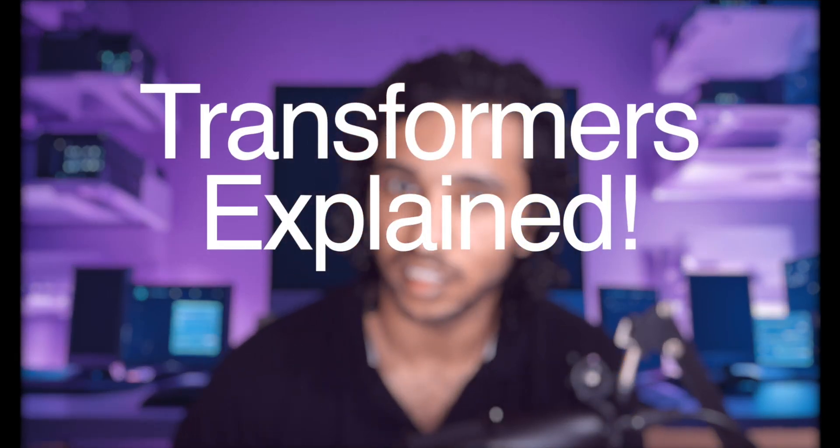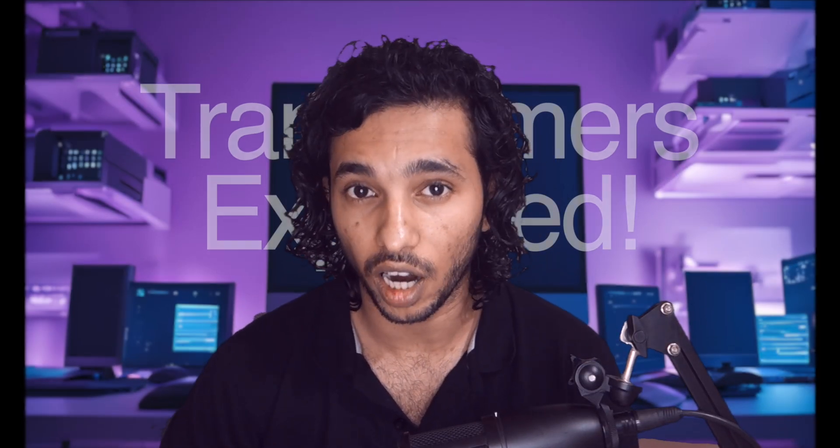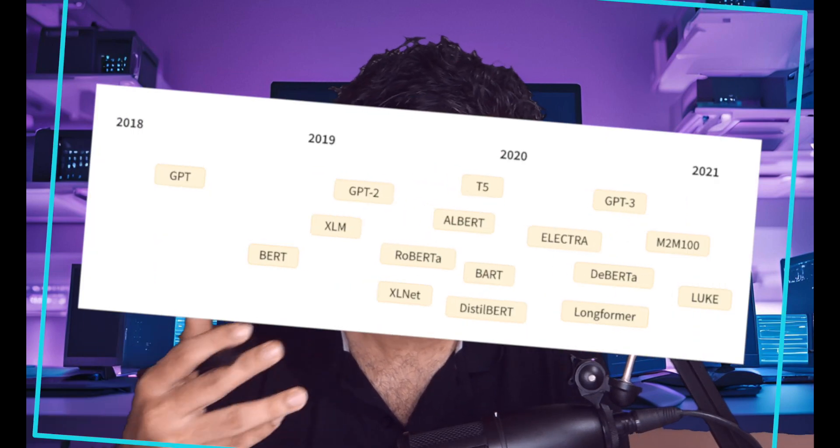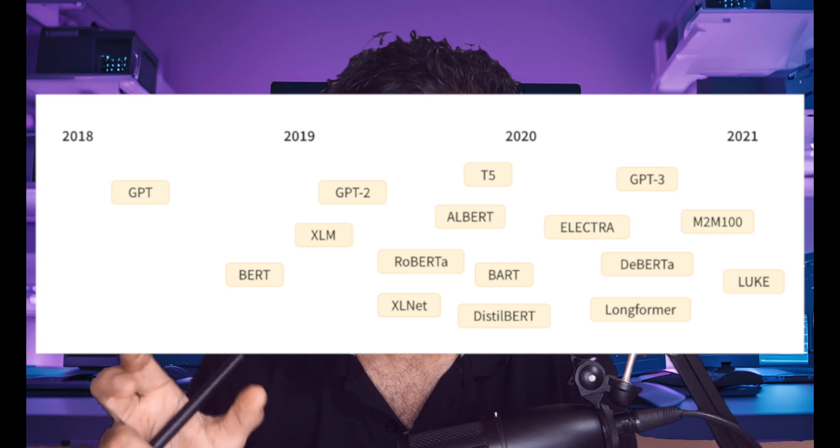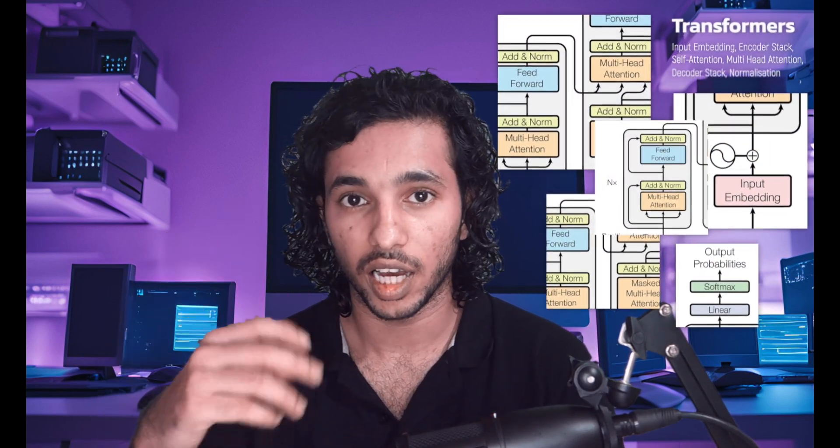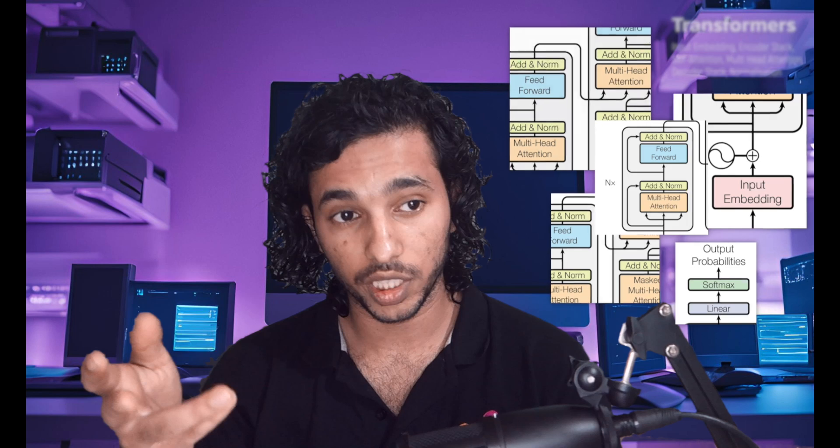Welcome to the Transformers Explained series. Transformers are at the heart of most of the state-of-the-art AI models today. Even ChatGPT and other language models like BERT use Transformers at their core. In this series, we will try to understand how Transformers work from start to end. We will look into each section of the Transformer architecture and understand how they work, how they understand words, how they are able to communicate with you, and how they are able to do other language tasks like language translation so well.